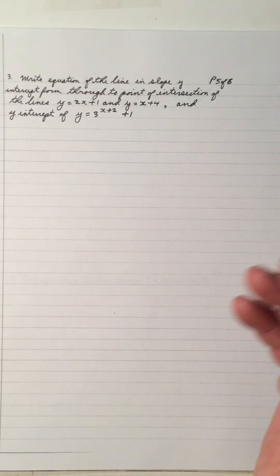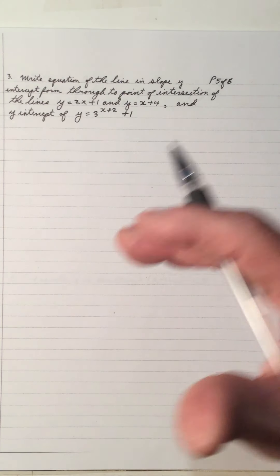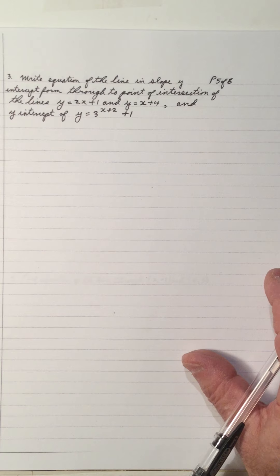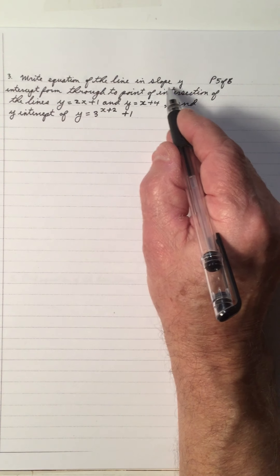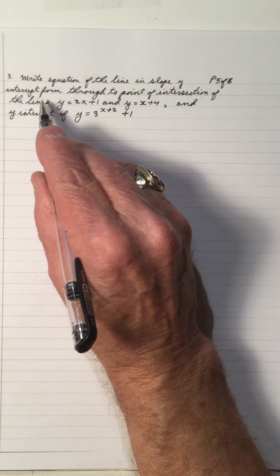Hopefully everything is going okay. We're reviewing slope y-intercept forms of lines made up of different concepts: passing through points, passing through vertices, parallel lines, perpendicular lines, and so on.